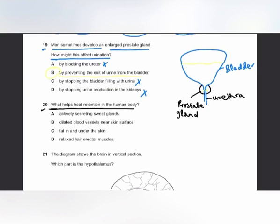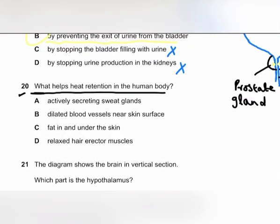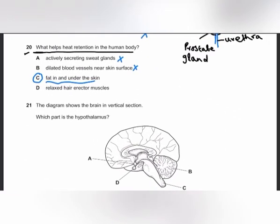MCQ number 20: what helps heat retention in the human body? Actively secreting sweat glands cause more heat loss, not retention. Dilated blood vessels near the skin surface allow more blood flow near the skin, increasing heat loss by radiation. Fat in and under the skin is the answer because fat acts as a heat insulator, minimizing heat loss. The answer is C.